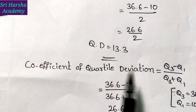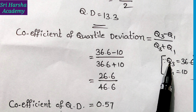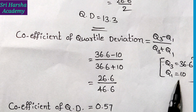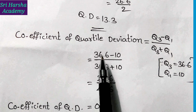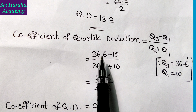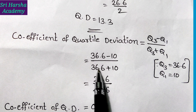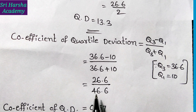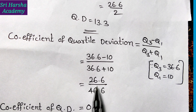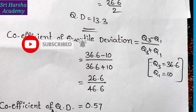The coefficient of quartile deviation formula is Q3 minus Q1 by Q3 plus Q1. Q3 value is 36.6 and Q1 value is 10. Substituting: 36.6 minus 10 by 36.6 plus 10. 36.6 minus 10 gives 26.6, and 36.6 plus 10 gives 46.6. So 26.6 divided by 46.6 gives 0.57. This is the value of the coefficient of quartile deviation.